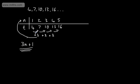We find the common difference, we multiply it by n, and then think to ourselves what do we need to do to get to this number?